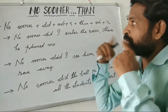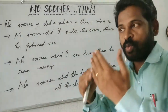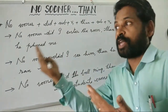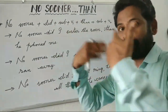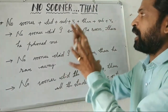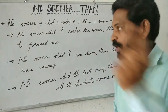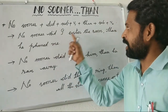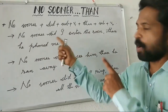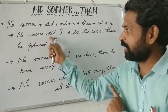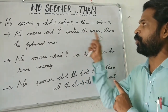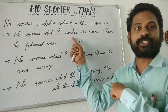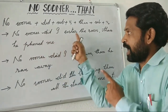We will go to the first example. No sooner did I enter the room. So clearly: no sooner, did I enter the room. Here 'did' is used and 'enter' is the V1 — present tense form.